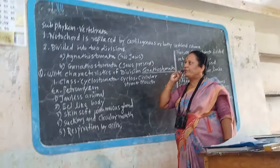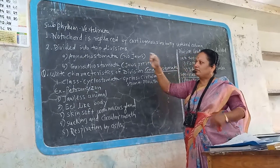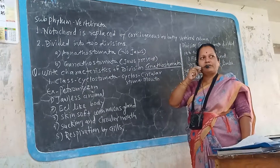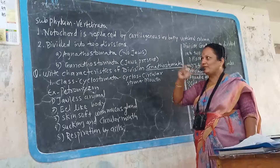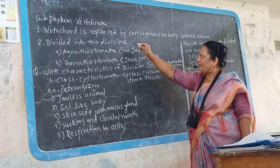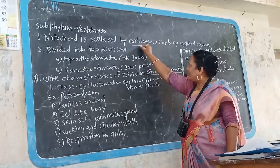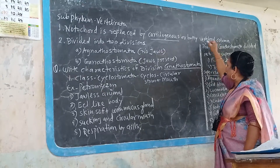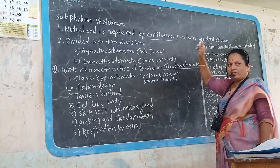Subphylum Vertebrata characteristics: one of the peculiar characteristics is that the notochord is replaced by a cartilaginous or bony vertebral column.